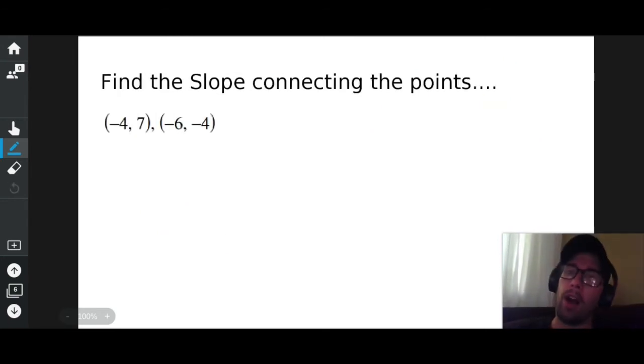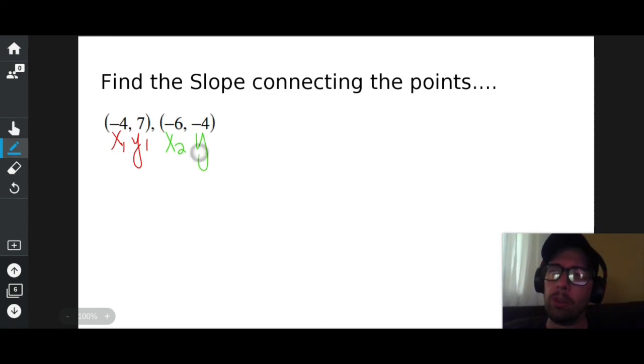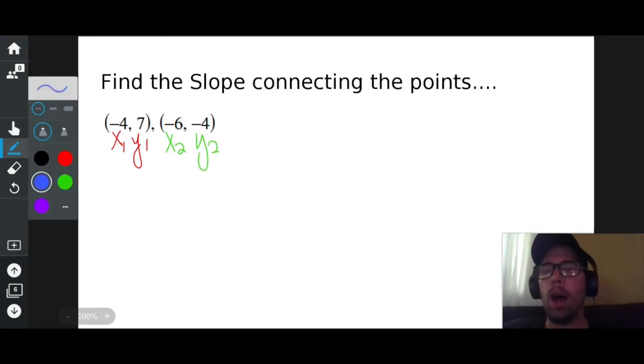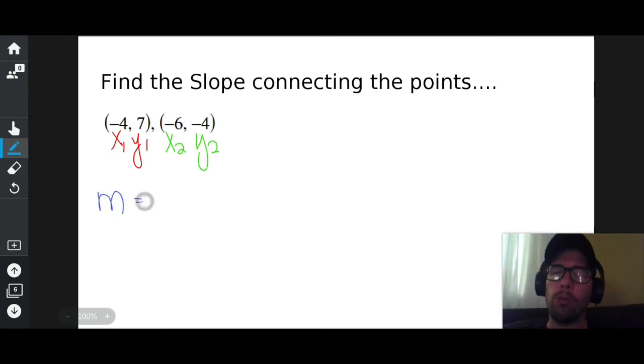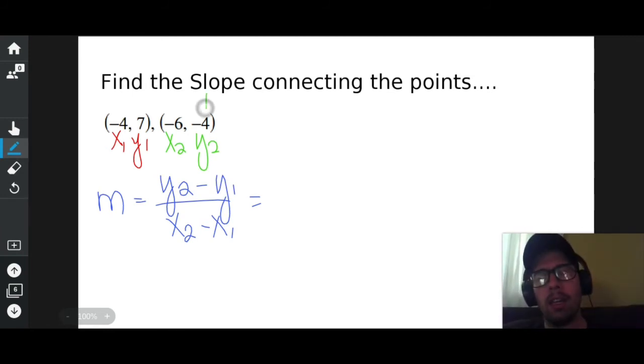So let's try it out. Find the slope connecting those points. So step one is label the points: x sub 1, y sub 1, x sub 2, y sub 2. I'm going to write out the slope formula in full. I like to write out the formula every time. The slope formula is y sub 2 minus y sub 1 over x sub 2 minus x sub 1.